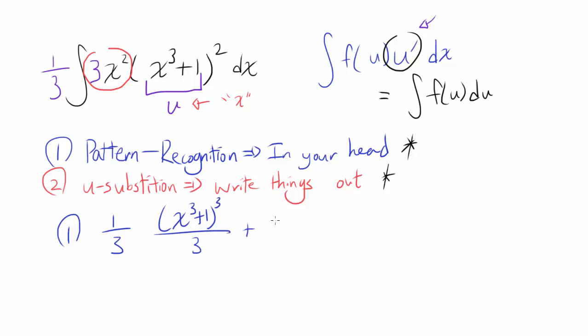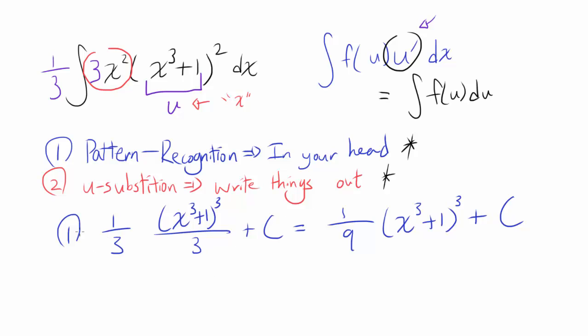So what we get is one ninth times x cubed plus 1 cubed, plus C. That's our pattern recognition answer — and you can tell, you can do it mostly in your head, and it's pretty fast.